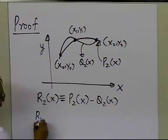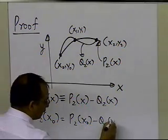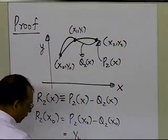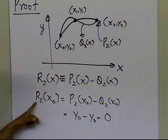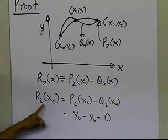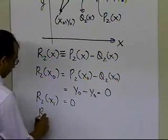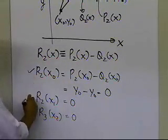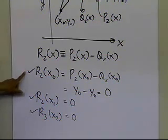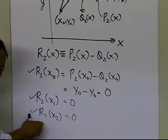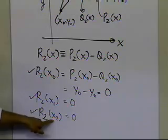There's something I know about r2(x): if I substitute x0 for x, I get p2(x0) minus q2(x0). What is p2(x0)? It's nothing but y0, and q2(x0) is also y0, so I get zero. So this new polynomial r2(x) has a zero at x0. Similarly, I can show that r2(x1) is zero and r2(x2) is zero. So r2 is zero at x0, zero at x1, and zero at x2. That doesn't necessarily mean it's zero everywhere — the only thing shown so far is that the polynomial r2 is zero at these three data points, because p2 and q2 both pass through those three data points.